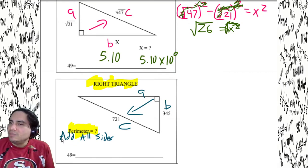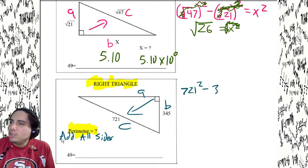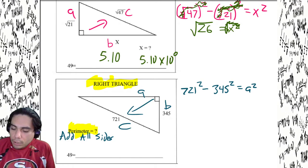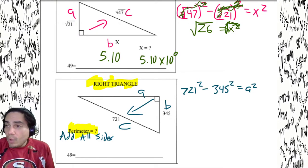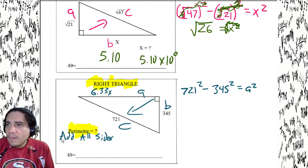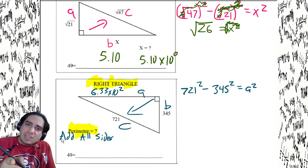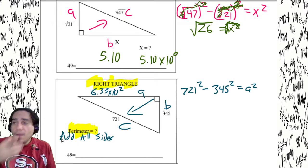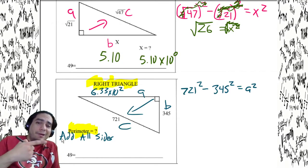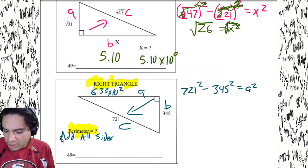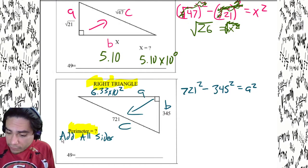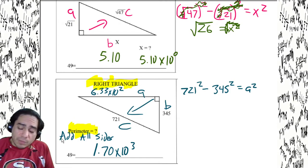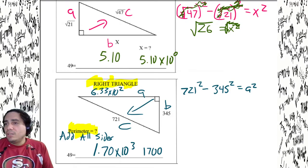We've got 721 and 345. 721 squared minus 345 squared equals a squared. Calculate: 721 squared minus 345 squared, subtract, square root — I end up with roughly 6.33 times 10 to the second. Keep it in the calculator. Now add 721 plus 345 plus that result. Final answer: 1.70 times 10 to the third, or 1700 in standard notation.